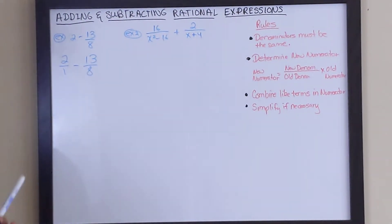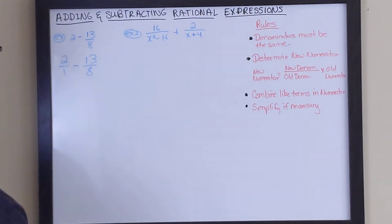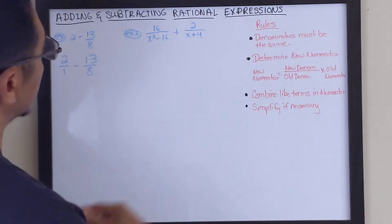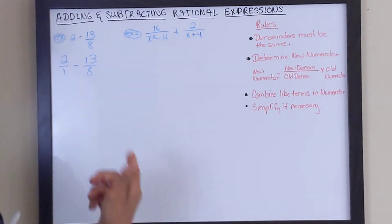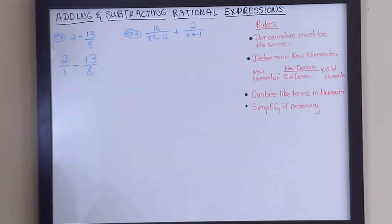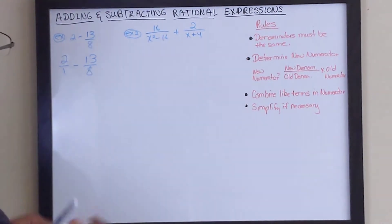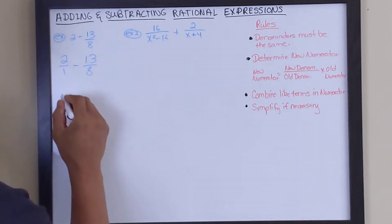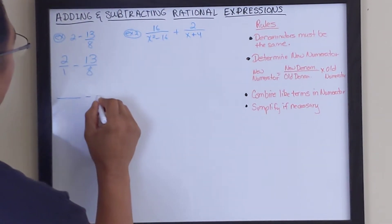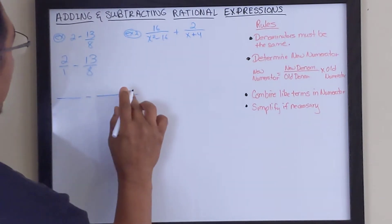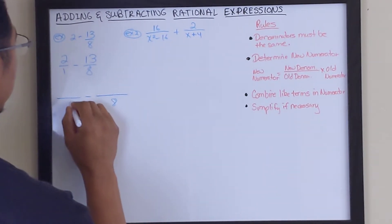Now let's determine what the denominator must be, because we have to have the same denominator. We've got a 1 and an 8. Using the process of least common multiple, our common denominator is going to be 8.